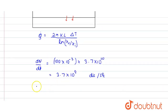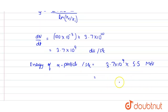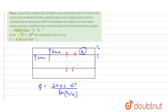Each alpha particle carries 5.5 MeV of energy. Multiplying the disintegration rate by the energy per alpha particle gives the total energy per second: 3.7 × 10⁹ × 5.5 MeV = 2.035 × 10¹⁰ MeV per second. Converting to joules: 2.035 × 10¹⁰ × 10⁶ × 1.6 × 10⁻¹⁹, or equivalently multiplying by 1.6 × 10⁻¹³ joules per MeV.